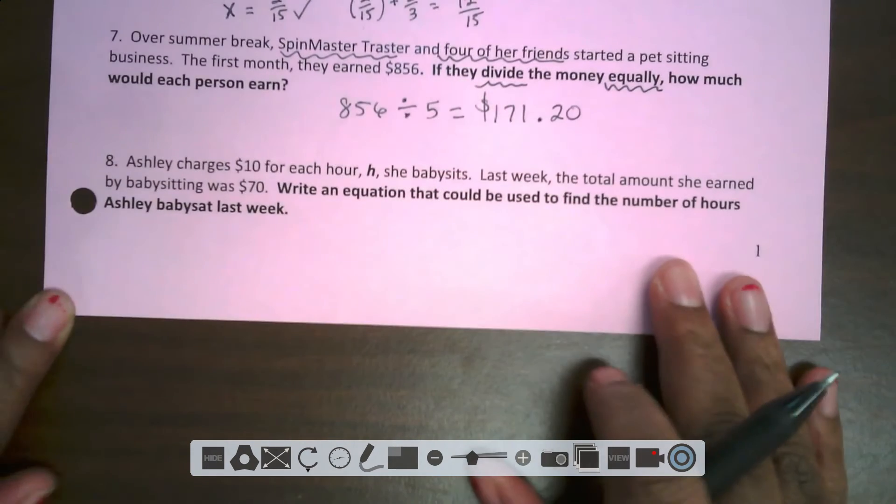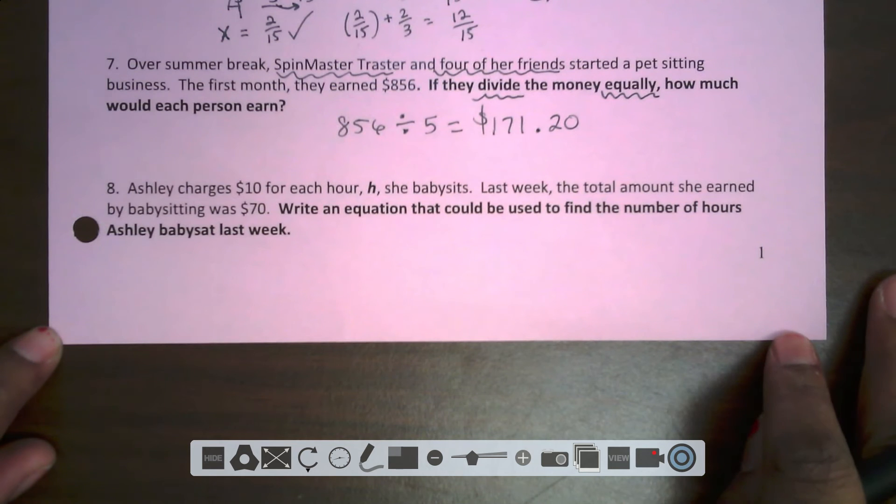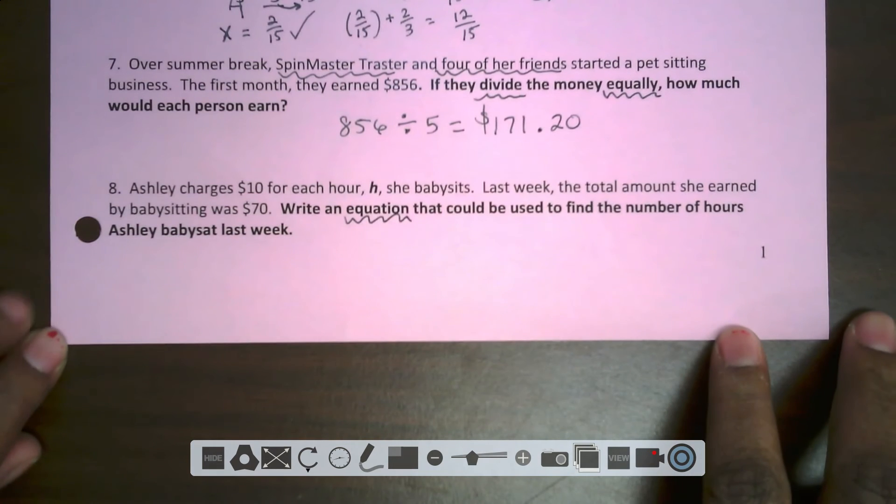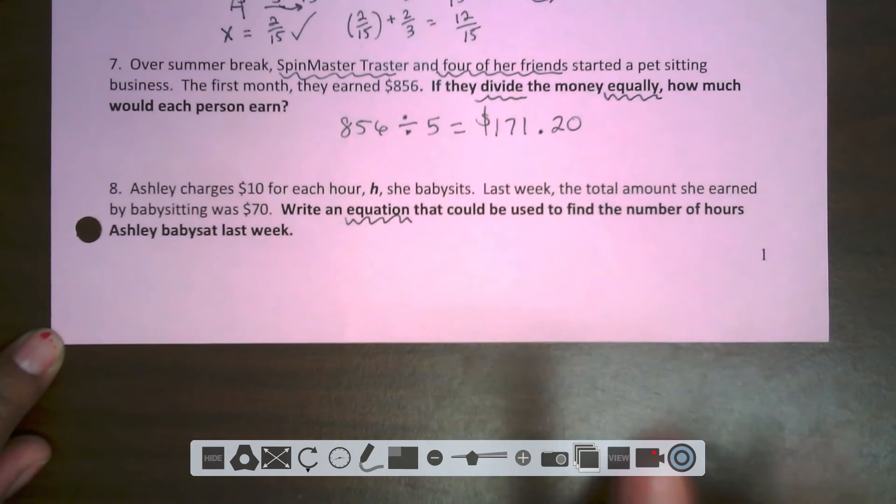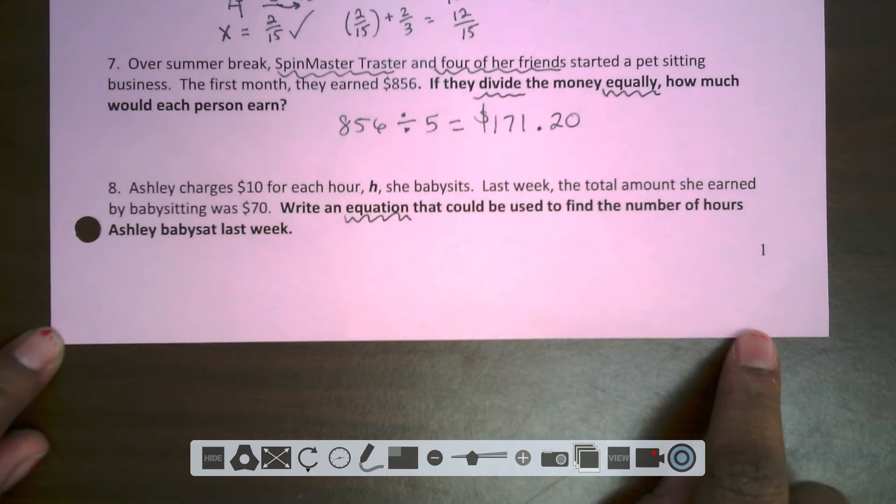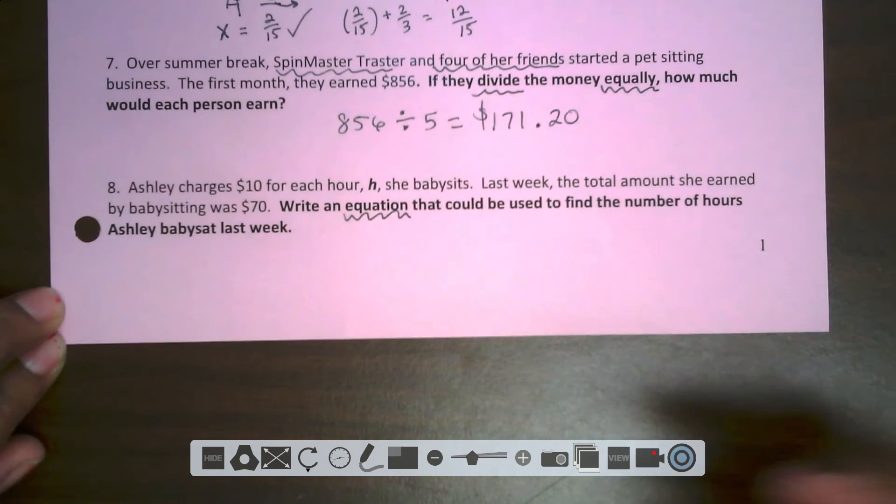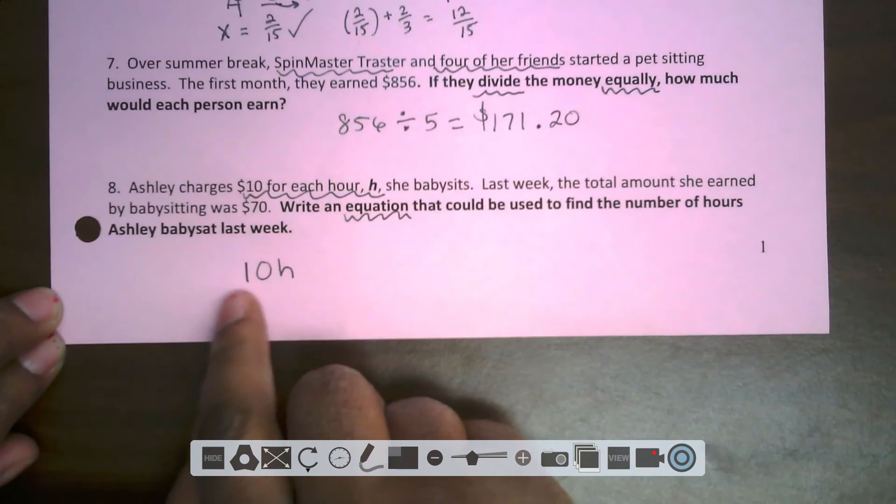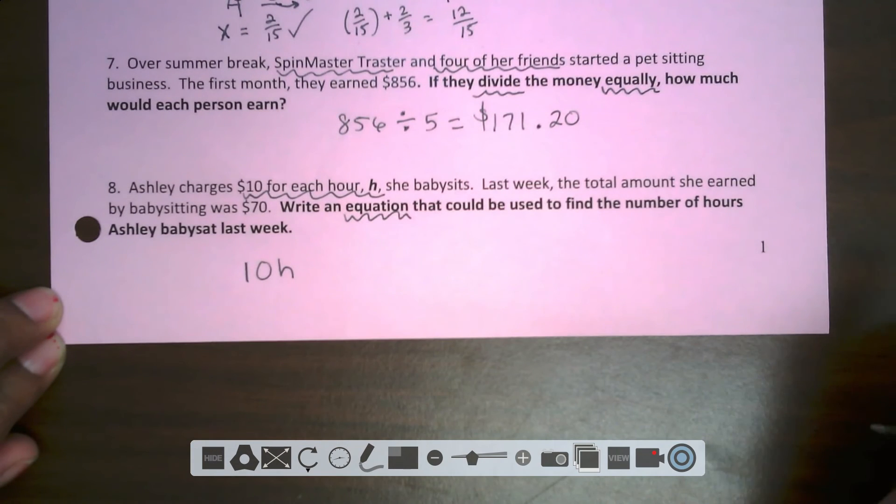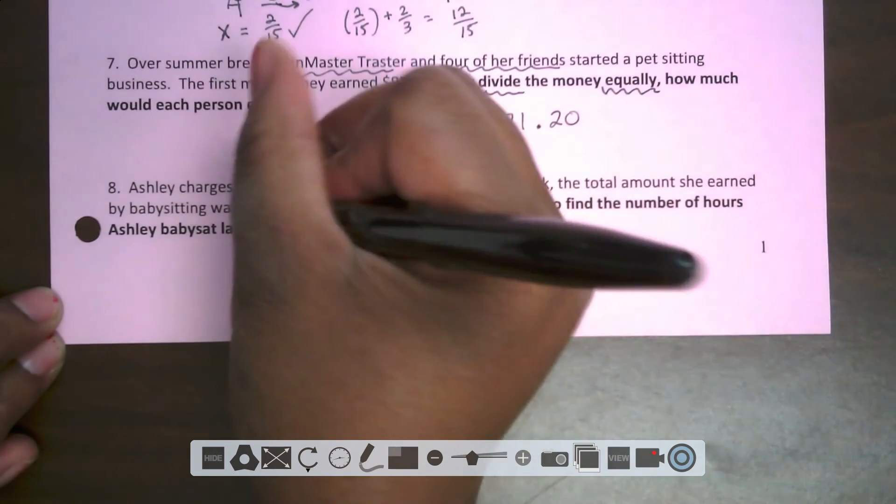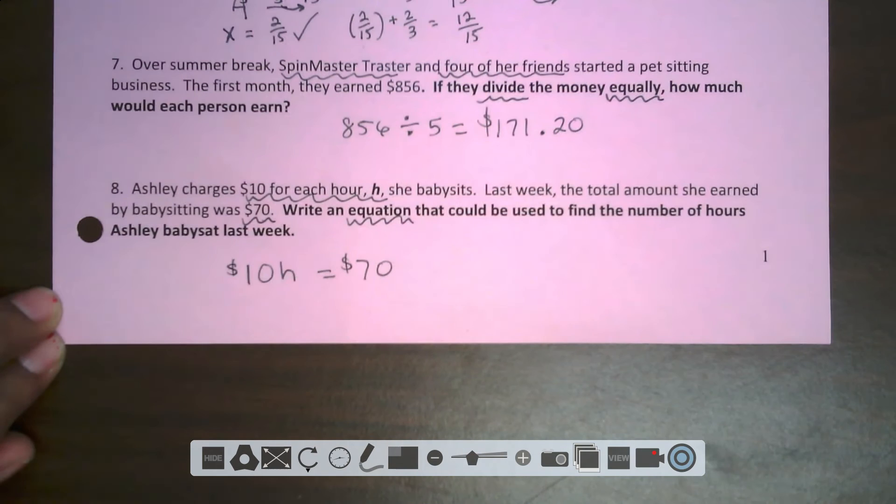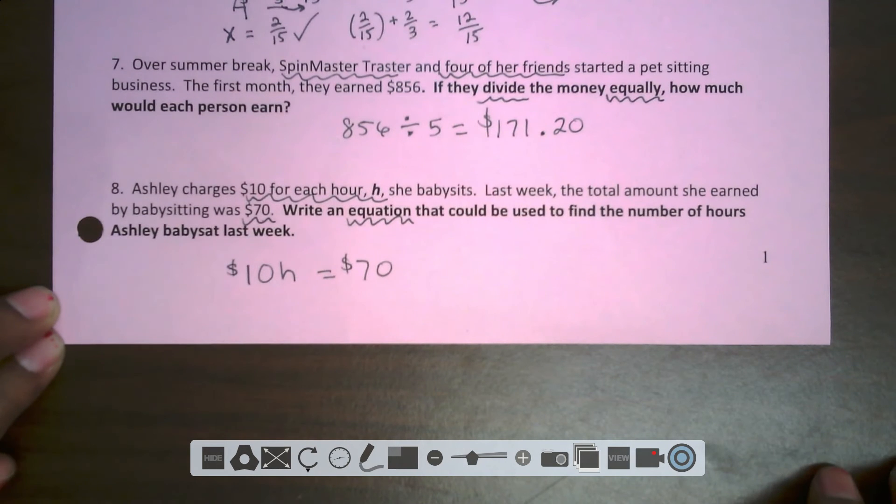Number eight. Ashley charges $10 for each hour H she babysits. Last week, the total amount she earned by babysitting was $70. Write an equation that could be used to find the number of hours Ashley babysat last week. So now we have an equation, so we will have an equal sign. $10 for each hour H, so that will be 10 H. $10 times the number of hours she babysits. And it's saying that when she did that, she made $70. So here's our equation. 10 H equals $70.